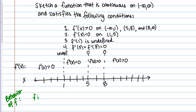F is increasing from negative infinity to 1, and also from 5 to 8. Where F prime of X is less than 0, that tells me the derivative is negative, which means the original function is decreasing. So F is decreasing on the interval from 1 to 5.